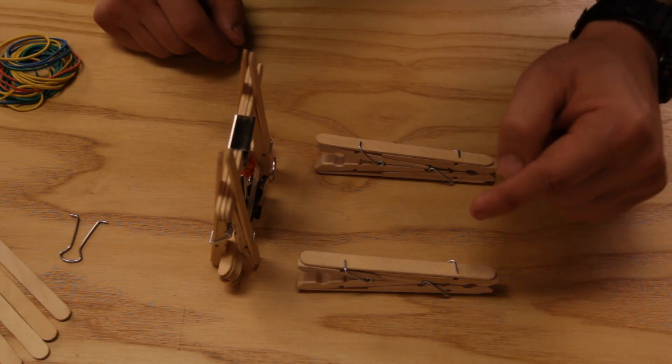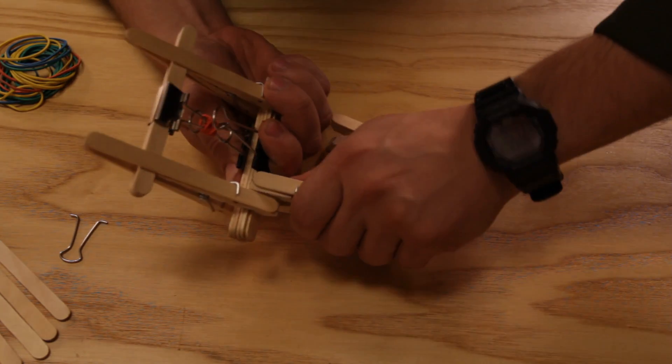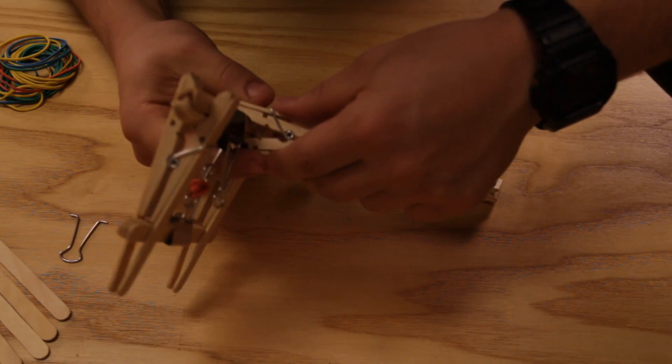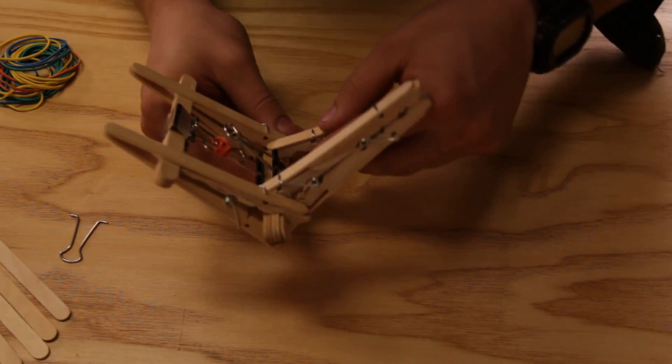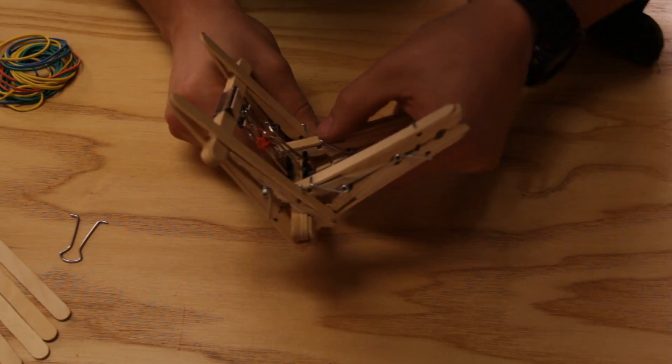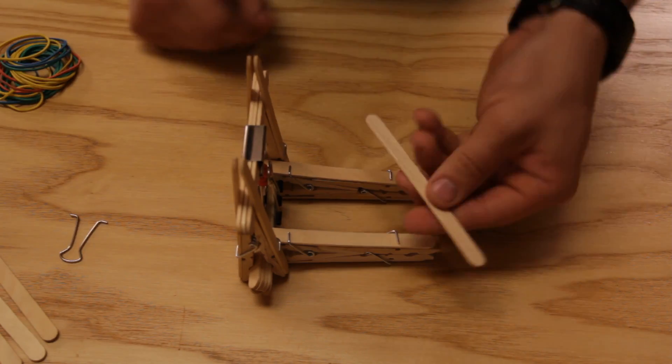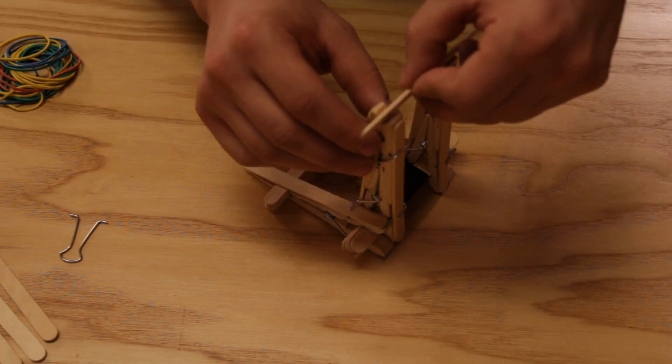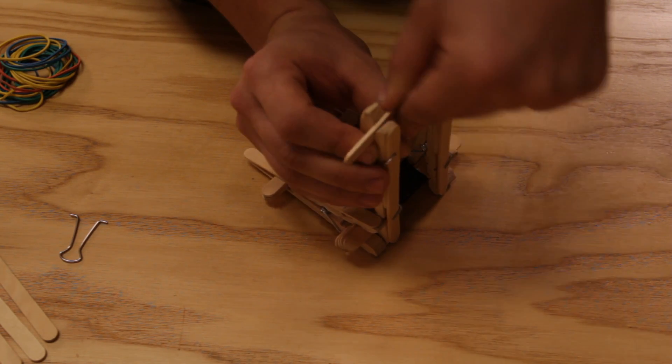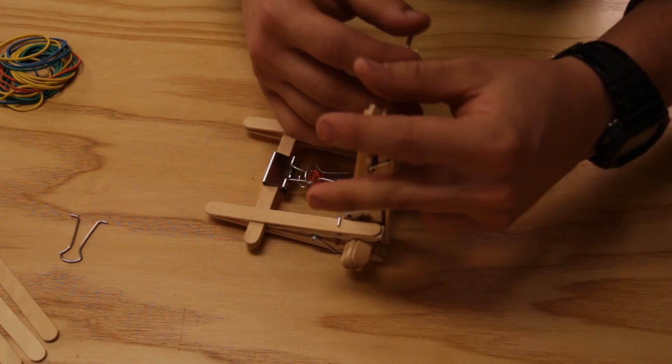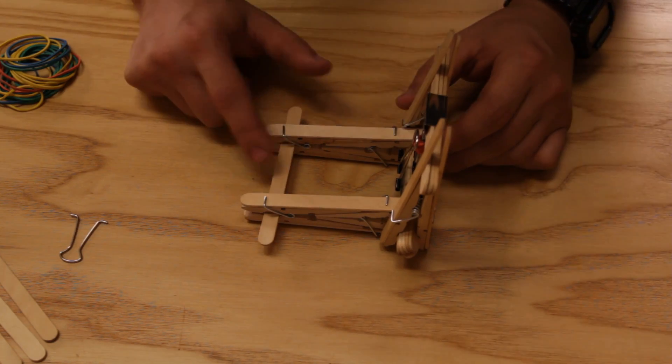The next thing that we're going to do is attach the legs to the frame. Put them on the inside like so. Then add the second one. Next we're going to add one popsicle stick to the back. When you add it to the back it should look like this.